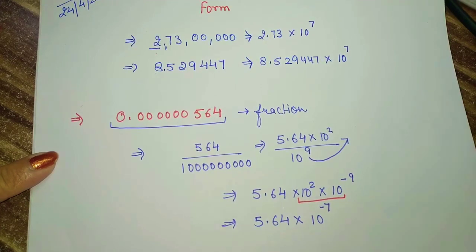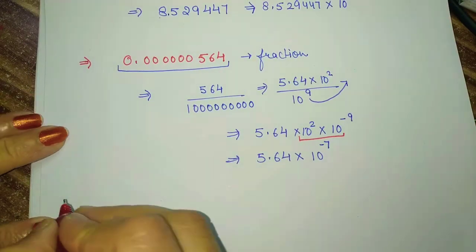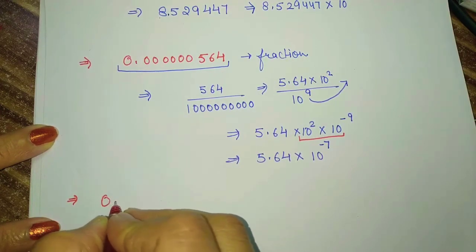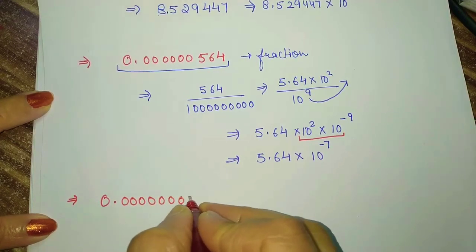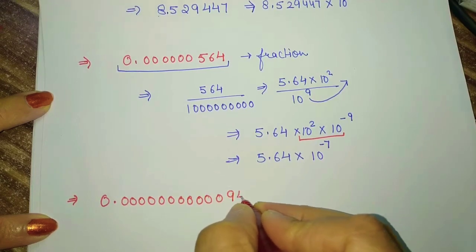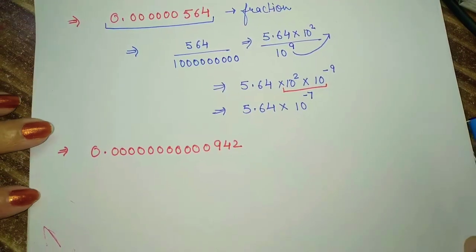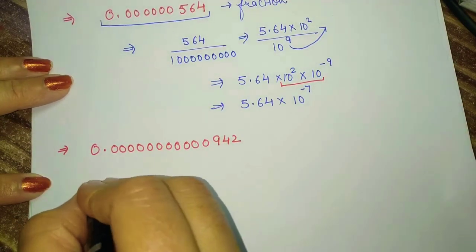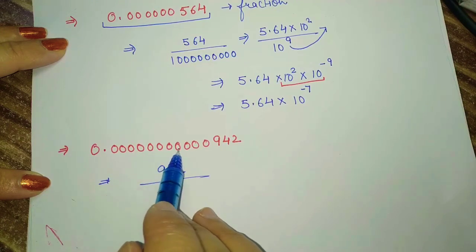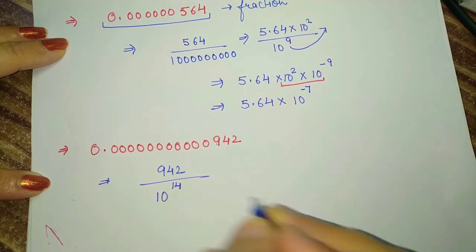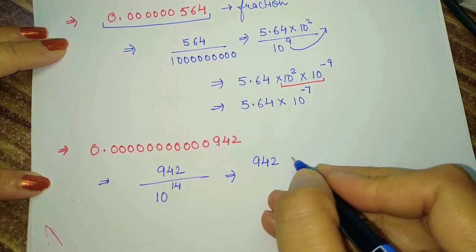Now this is how we convert a smaller number into standard form. Let's look at one more number. They have given a number 0. followed by 14 digits: 1, 2, 3, 4, 5, 6, 7, 8, 9, 10, 11, 12, 13, 14 — that is 942. The first step: write the given decimal number as a fraction. We write 942 upon 10 to the power 14, counting 1, 2, 3, 4, 5, 6, 7, 8, 9, 10, 11, 12, 13, 14.